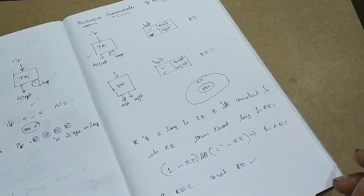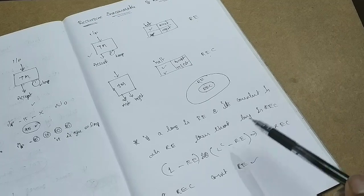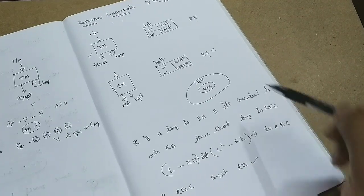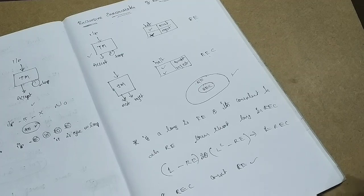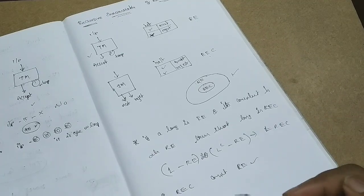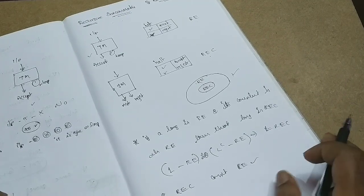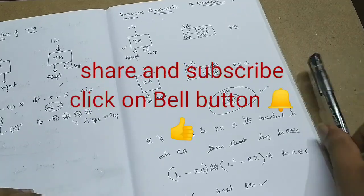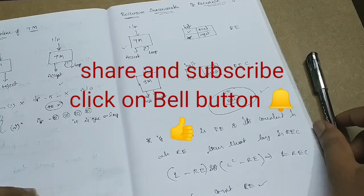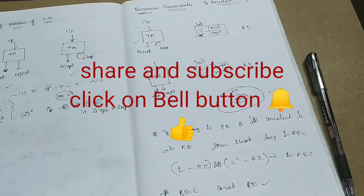This is it with the recursive and recursive enumerable languages. The diagram is the same — draw it correctly and you will get full marks. Thanks for watching. Do share and like, and subscribe so that you get the notifications. Bye.